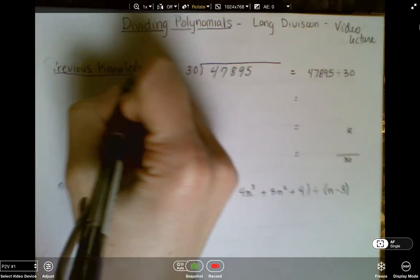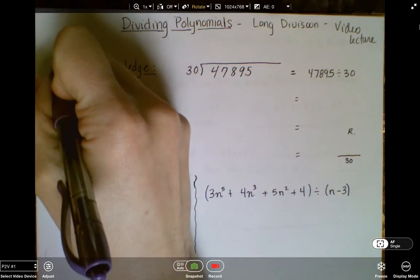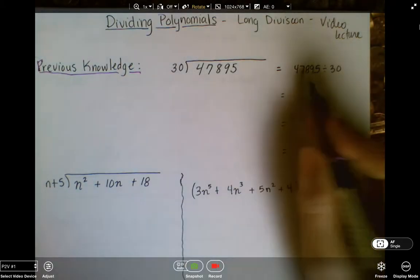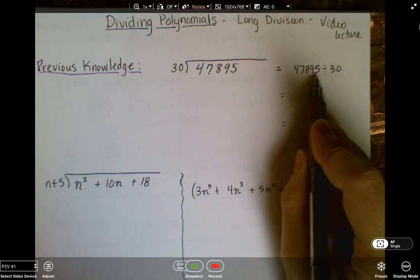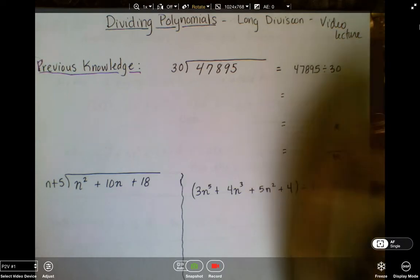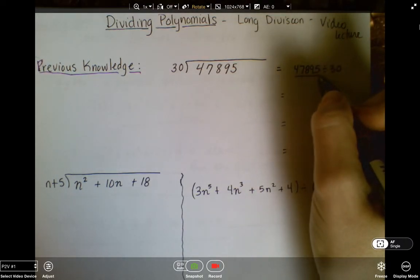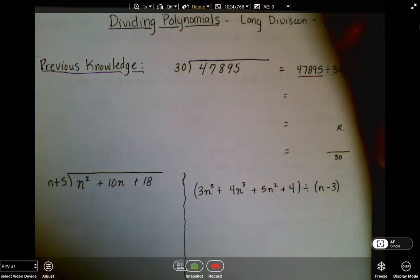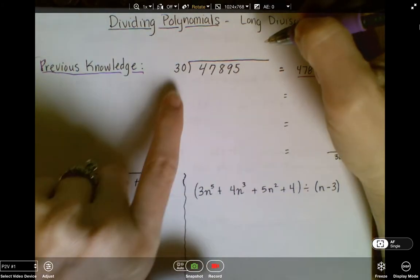So we're going to go back and revisit some of our previous knowledge, things that we know from the past. So if I were looking at 47,895 divided by 30, I would put the term being divided in the box, the divisor out of the box, and I would work through this piece by piece.